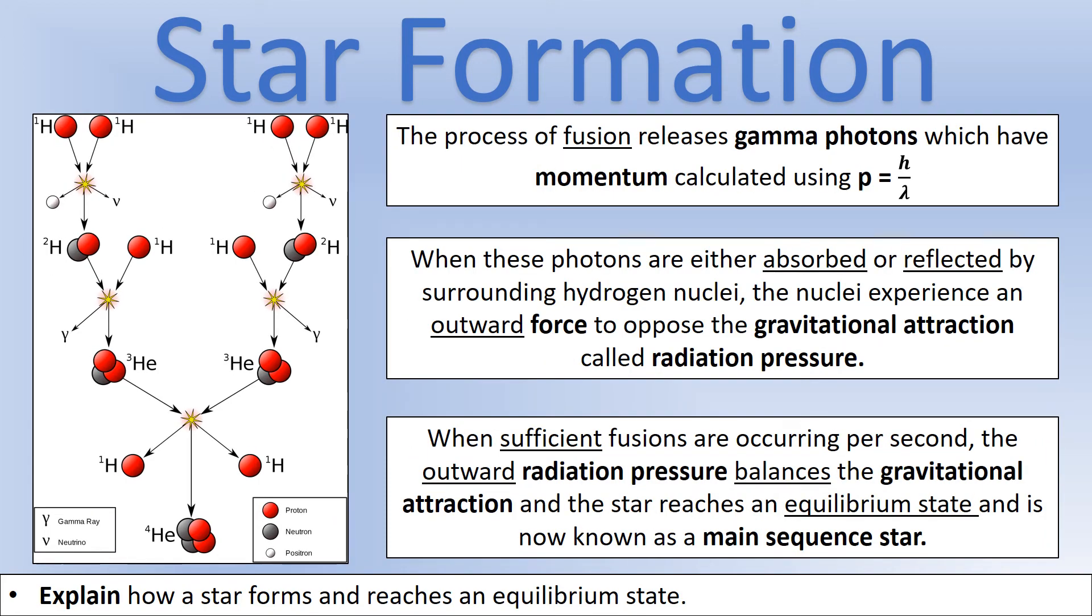The process of fusion releases gamma photons. For electromagnetic radiation, we can calculate the momentum of a photon using momentum equals Planck's constant divided by wavelength. So there's a different way to calculate momentum of photons compared to particles, but they also have momentum.